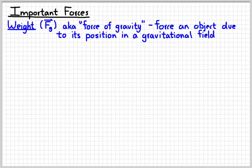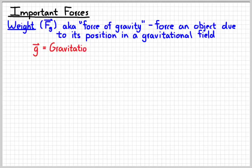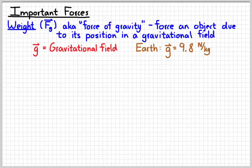The first force is referred to as weight. Weight is given the symbol F subscript G, because it's caused by gravity, and it's often referred to as the force of gravity. Weight is the force on an object due to its position in a gravitational field. The value of the gravitational field has the symbol little g. On Earth, the value of g is 9.8 newtons per kilogram, which is approximately 10 newtons per kilogram — you're typically allowed to round that off to 10 to make calculations simpler.